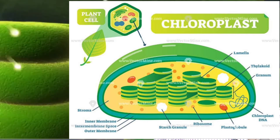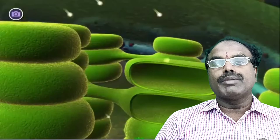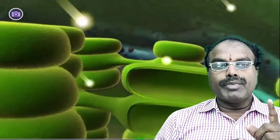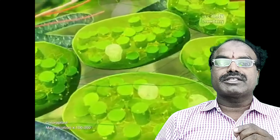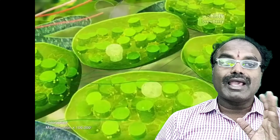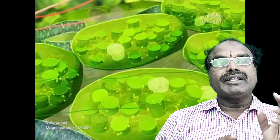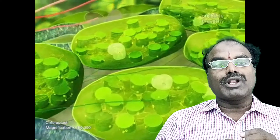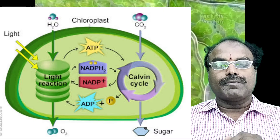The chloroplast consists of mainly three membranes. The third membrane forms stack-like structures called granum, which is the site of trapping solar energy. The intermediary fluid-filled portion is called stroma.